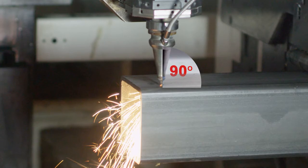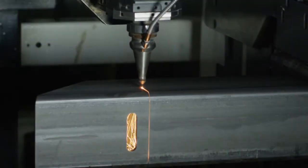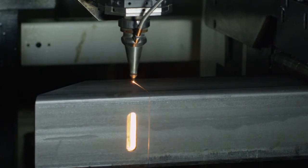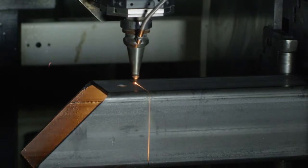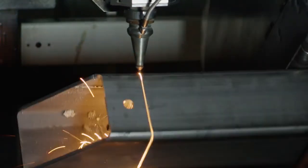As seen here, the tubing is being quickly and efficiently cut using the normal to surface process because the head of the laser is positioned at a 90 degree angle from the wall of the square tubing.